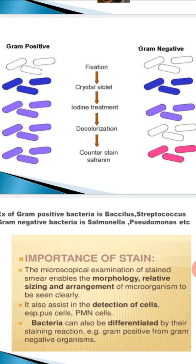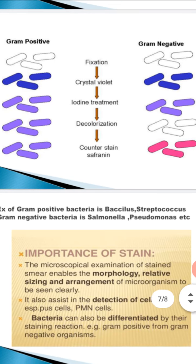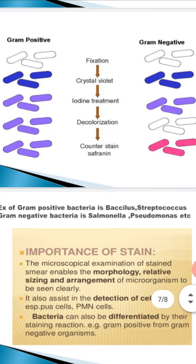After the complex is formed, we need to break it. For this we use alcohol, which acts as a decolorizing agent. When we put alcohol on gram positive bacteria, because the peptidoglycan layers are very thick, the stain complex has been embedded deep in the layers.